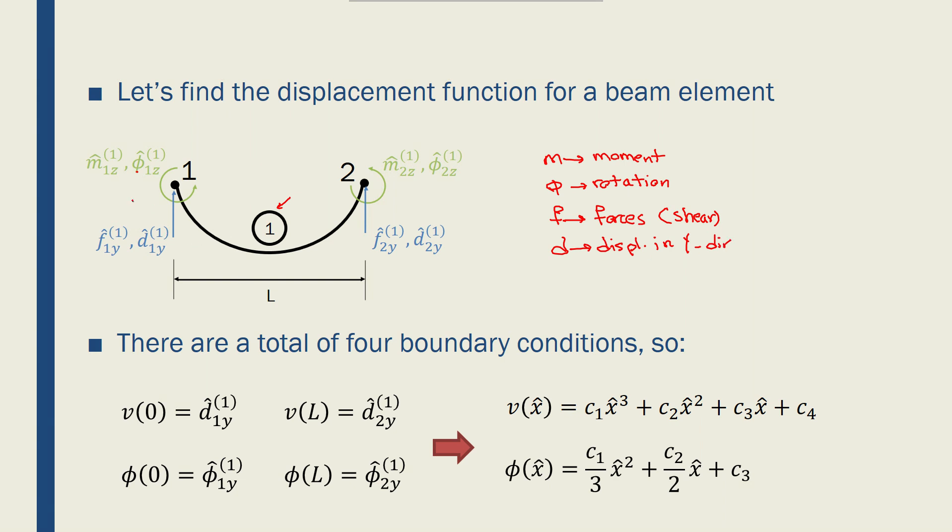So I have phi, D, phi, D, four boundary conditions in total for one element. Four boundary conditions means I can find four coefficients for a displacement function, which means I should have a third order polynomial for my displacement function.